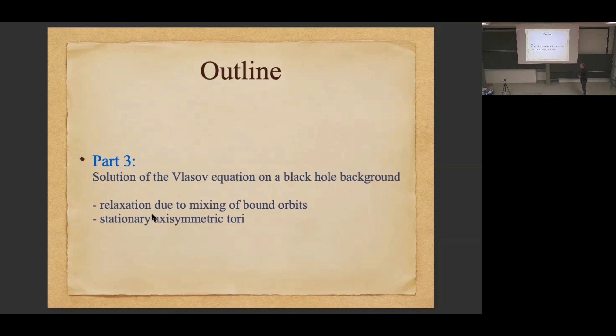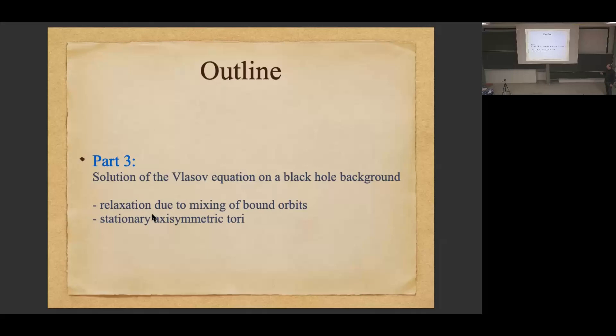Today I'm going to finish with two things, which will be part three and four, covering different topics. Part three is about applications of the Vlasov equation on a fixed black hole background. I'm going to neglect the self-gravity of the gas completely, assuming gravity is dominated by the black hole, and I'll assume a non-rotating black hole to make calculations simpler, though in principle one could do the same with the Kerr black hole.